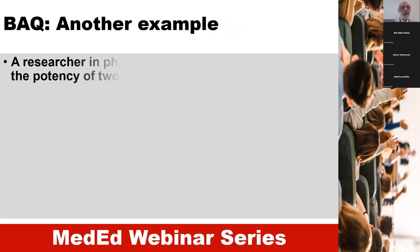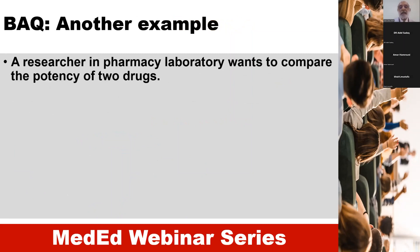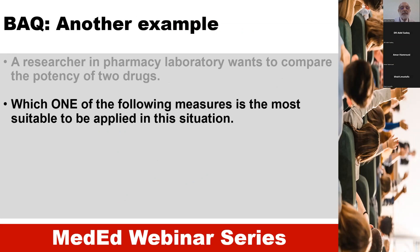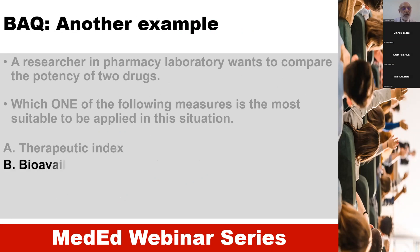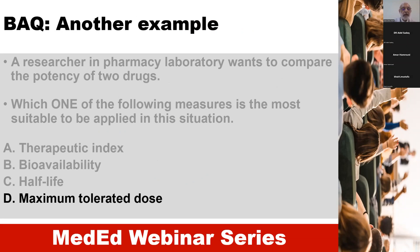Another example: a researcher in a pharmacy laboratory wants to compare the potency of two drugs — that is the stem. Which one of the following measures is the most suitable to be applied in this situation? This is the lead-in question, and the options are: therapeutic index, bioavailability, half-life, and maximum tolerated dose.